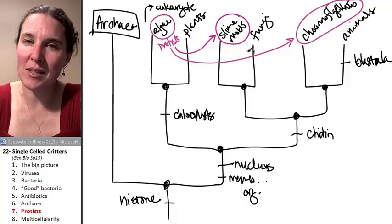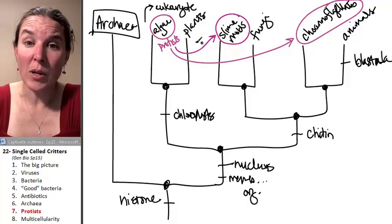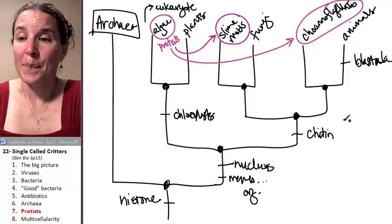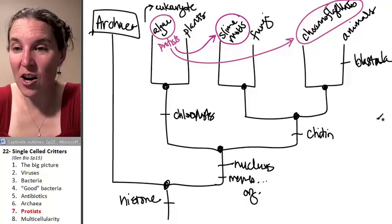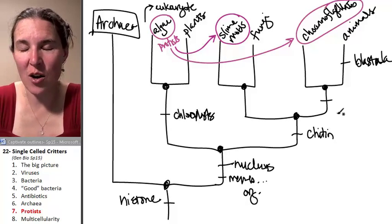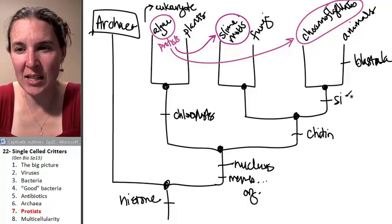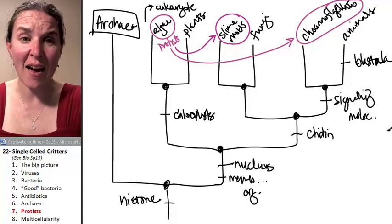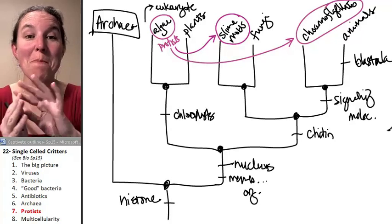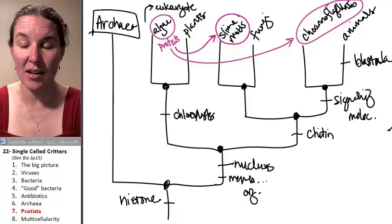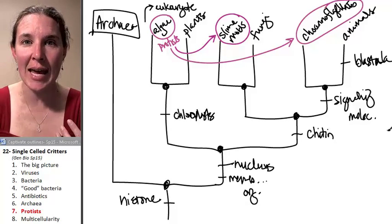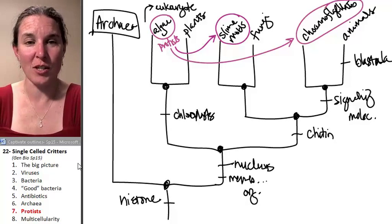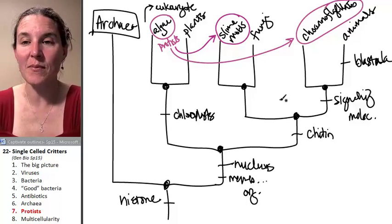Animals are not single-celled. There are some single-celled fungi. Plants are not single-celled. And they actually, the characteristic that choanoflagellates share with animals are these special signaling molecules. They basically have the same molecular message that they send to their cells. They talk to each other using the same tools, which nobody else has those tools, which is kind of awesome.